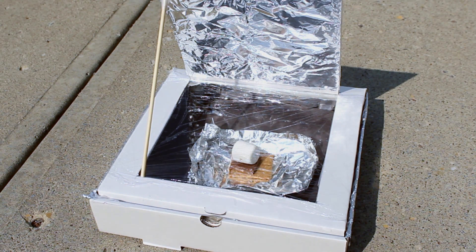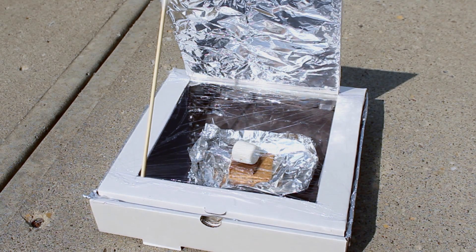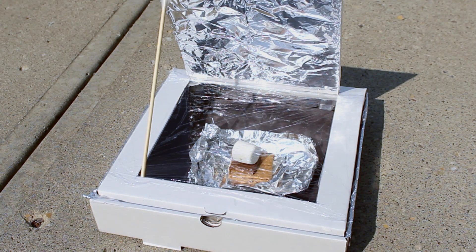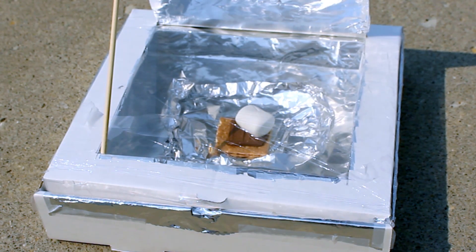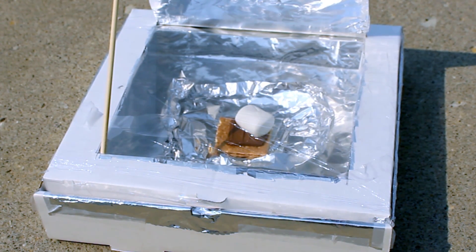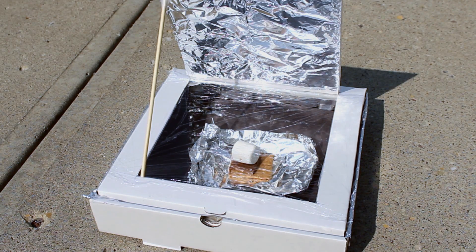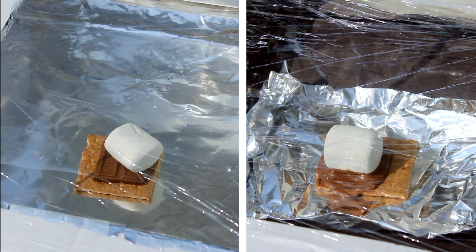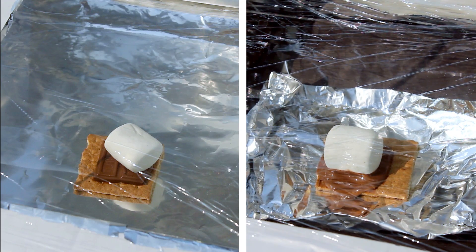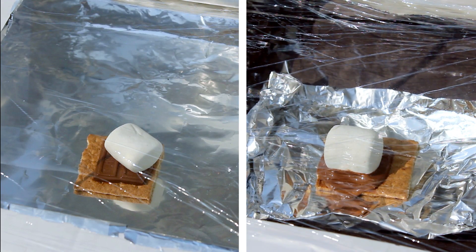After about an hour outside, at a temperature of 30 degrees Celsius, we tested the temperature of the air within both ovens. The oven with only aluminum foil had an air temperature of 65 degrees Celsius. The oven with black paper reached a higher temperature of 75 degrees Celsius. In this side-by-side comparison, you can see that the oven with the black paper had a much easier time melting the chocolate.